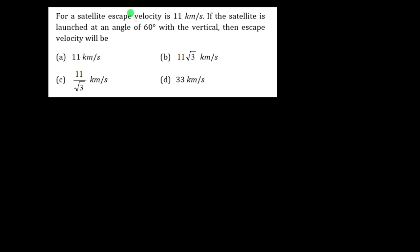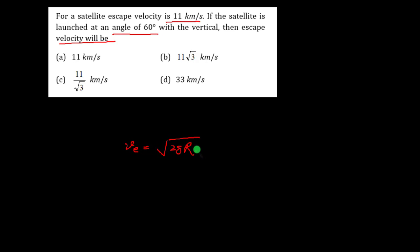For a satellite, the escape velocity is 11 km/s. If the satellite is launched at an angle of 60 degrees with the vertical, the escape velocity Ve = √(2gR) does not depend on the angle at which we launch the satellite. So the speed remains the same.